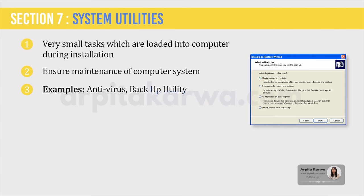Backup utility is another utility software which helps in the creation of a backup of the files on your computer. Most computer systems use a hard disk drive for storage. While these are generally very robust, they can fail or crash, resulting in costly data loss. Backup software helps you copy the most important files to another storage device, such as an external hard disk. You can also make an exact copy of your hard disk. That's it for this lecture — we will meet soon in the next lecture. Till then, happy learning and stay tuned to arpitakarva.com.